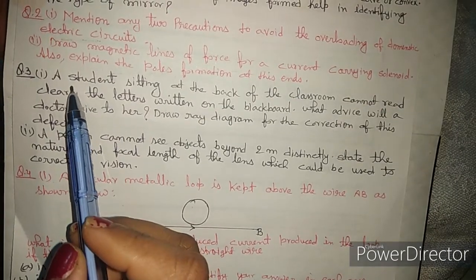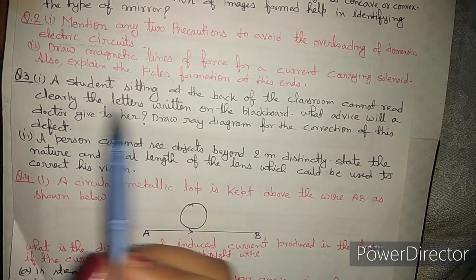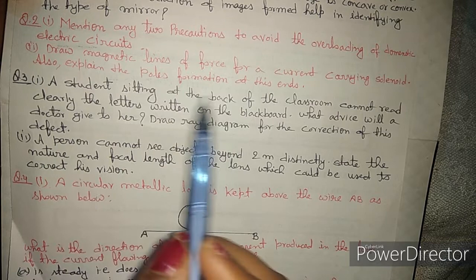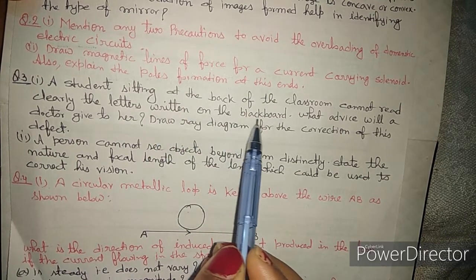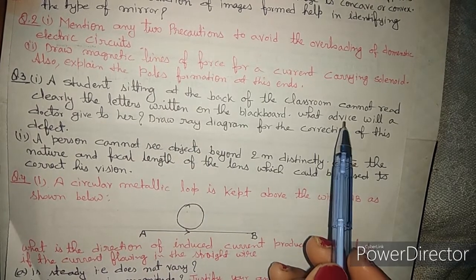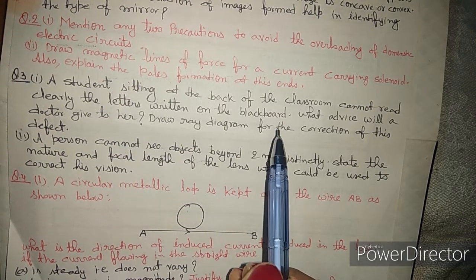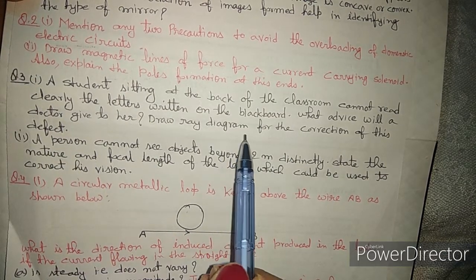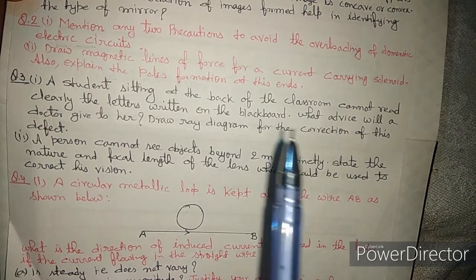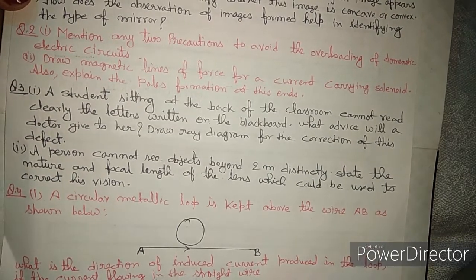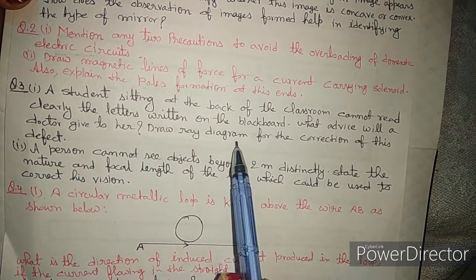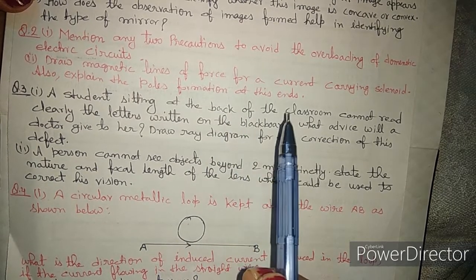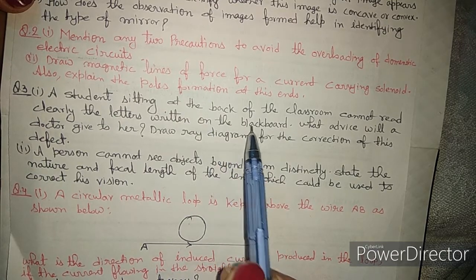Question three states: a student sitting at the back of a classroom cannot clearly read the letters written on the blackboard. This is from the human eye chapter. The student on the back bench cannot see the letters on the blackboard clearly. The doctor's advice is needed, and a ray diagram for the correction of this defect must be drawn. Since the student cannot see distant objects clearly, this student is a myopic person — they have myopia.